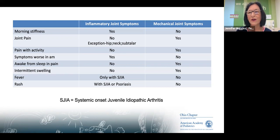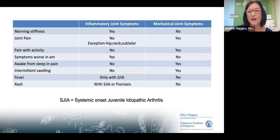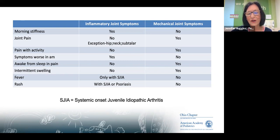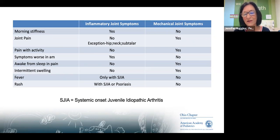Kids with arthritis are not waking from sleep in pain. If sleep is disrupted, it is more likely a mechanical issue. If the swelling is intermittent, it's also not likely to be inflammatory — inflammatory swelling is there until we make it better. We don't see fever with inflammatory arthritis except in systemic JIA, and those kids have way more systemic features. You can have a rash with systemic JIA or look for psoriasis — psoriatic arthritis will appear beneath the patch of psoriasis.